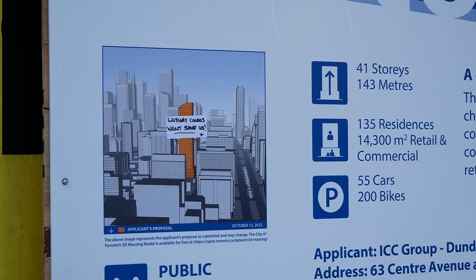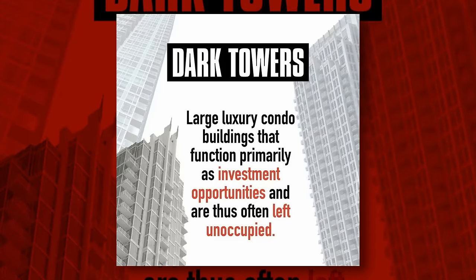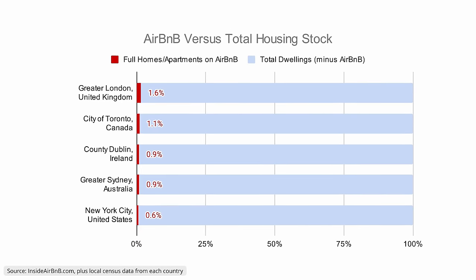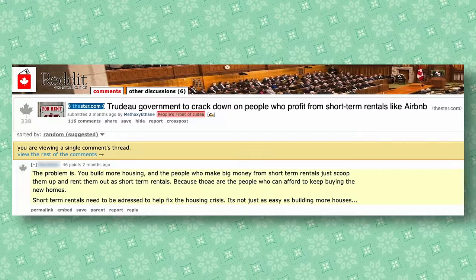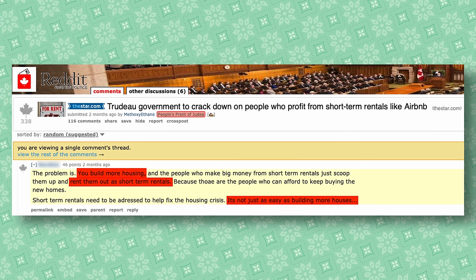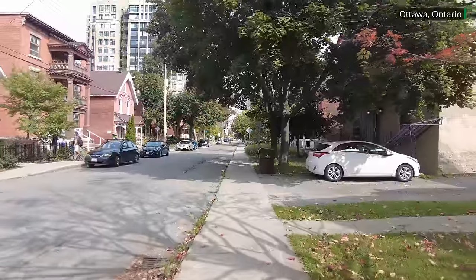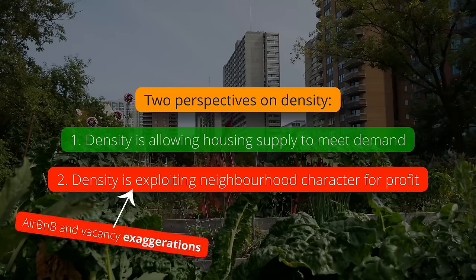Many NIMBY narratives basically function to uphold the idea of density being arbitrary exploitation of a community. The myth of abundant vacant apartment buildings allows people to oppose new apartments without dealing with the human reality of housing demand. Other people focus on Airbnb gobbling up new housing supply, but in most places it's small fish compared to demand from long-term residents. Yes, Airbnb can put pressure on housing supply, but it does not take up all or most new housing in a way that lets you dismiss the importance of housing construction until Airbnb is banned or something. Exaggerating or obfuscating the details on vacant homes or Airbnb functions to paint new housing development as arbitrary and unrelated to demand from long-term residents.